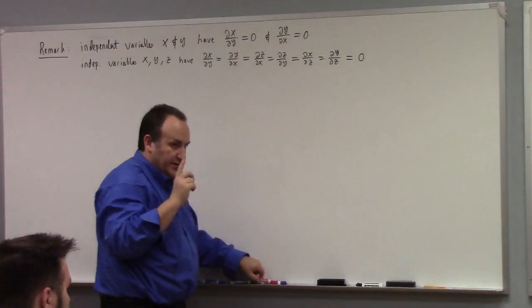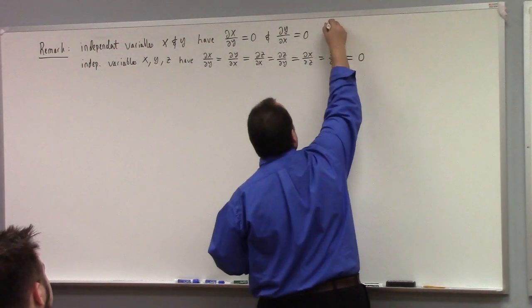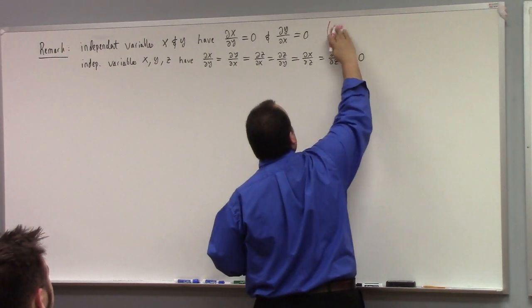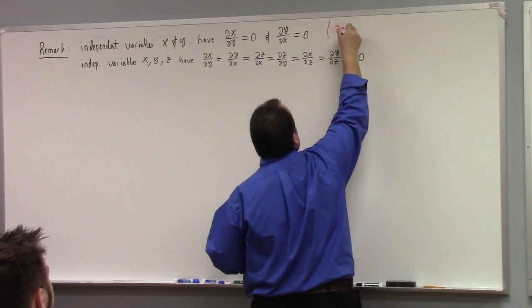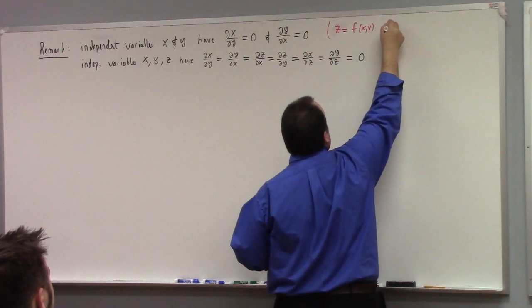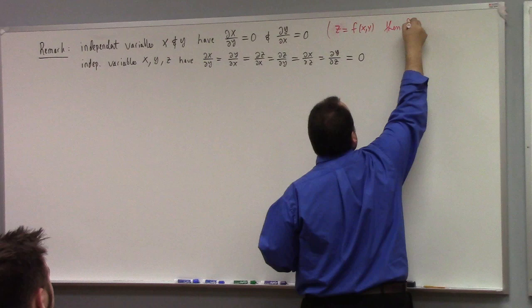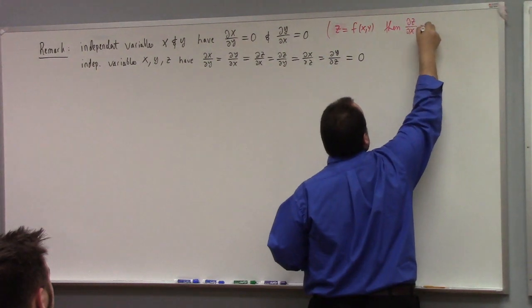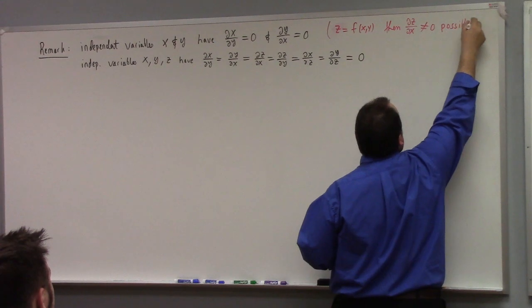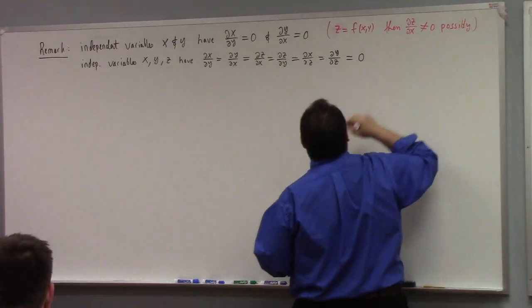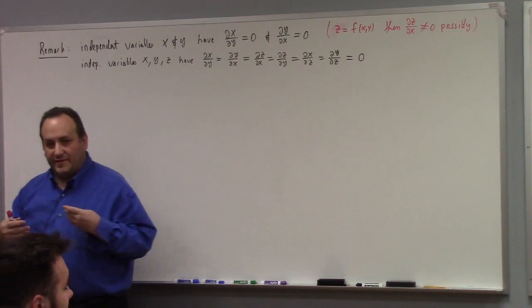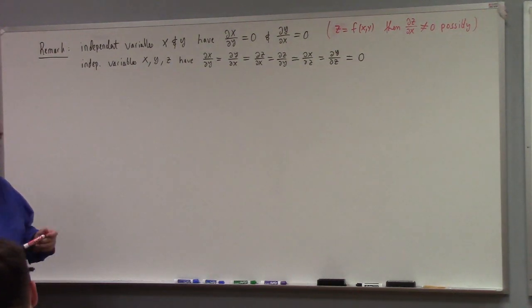Here's the thing: you might have z equal to some function of x and y, in which case the partial of z with respect to x is not necessarily zero. So the meaning of z as it relates to x and y depends on the problem — there's context we have to keep in mind.